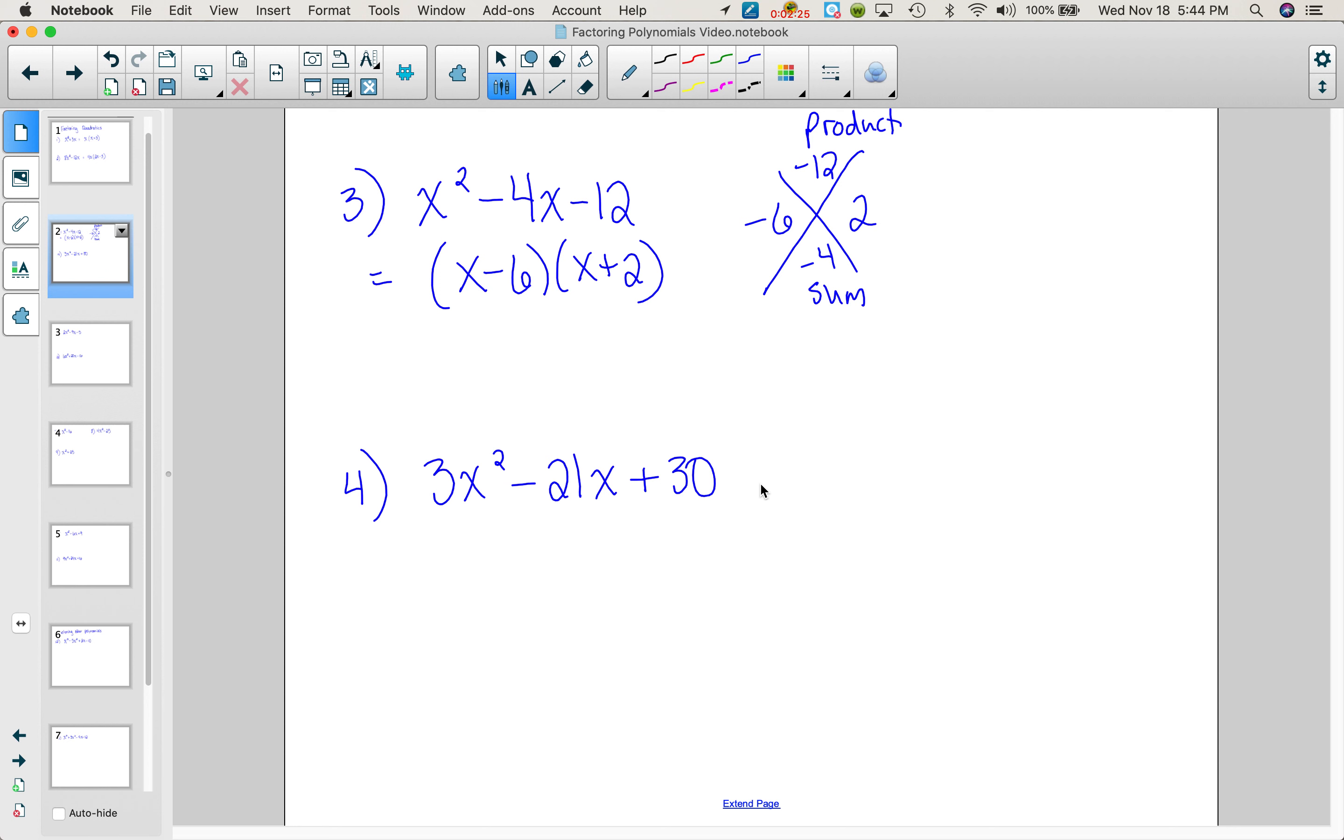Number 4, remember the first question to ask, is there a GCF? Yes. There's a 3 that can factor out, so you do that first. Now I have to look at what's left. How many terms does it have? 3. Is it a special case? No. Is the coefficient of the x squared a 1? Yes. Do a diamond problem and factor.